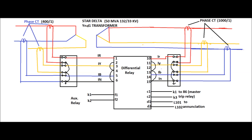The I-difference current and I-bias current are calculated. When the I-difference current is more than the I-bias current for a pre-defined value or pre-defined slope, the relay will send a trip signal by means of Q1 and K3. It also sends an annunciation to operating staff by means of L101 and L102.